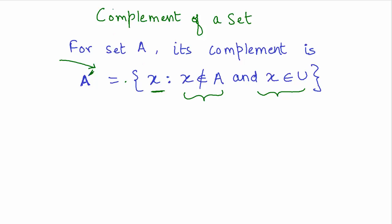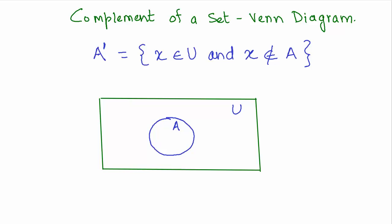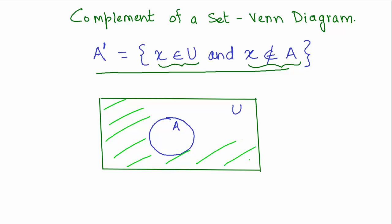Those elements are present in the universal set — so it's like everything except me in the universe comprises the complement. In the Venn diagram, the whole universe is contained within the rectangle representing the universal set, and everything in that universal set except set A represents A complement.